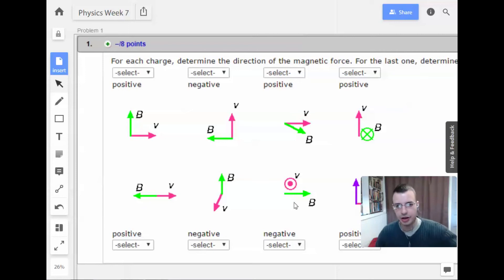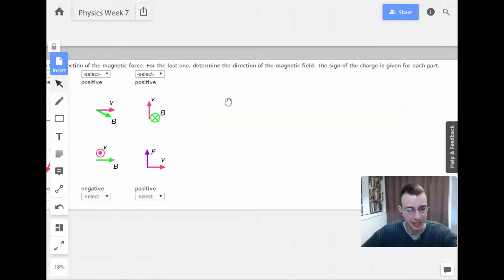Week 7, problem 1. This week we get to learn about magnetism. For each charge, determine the direction of the magnetic force. For the last one, determine the direction of the magnetic field. The sign of the charge is given for each part.